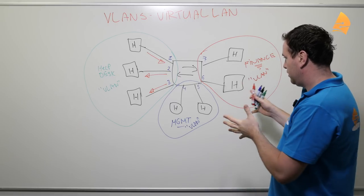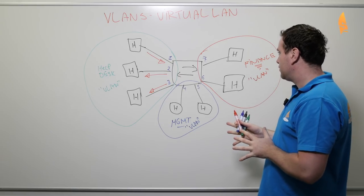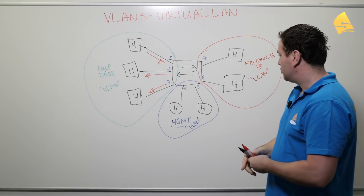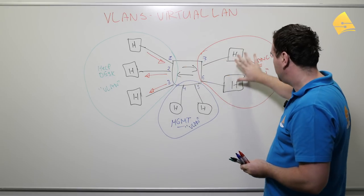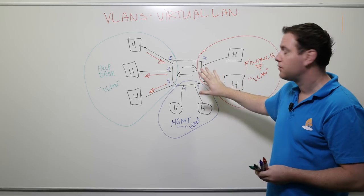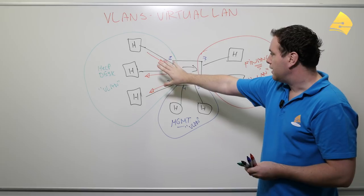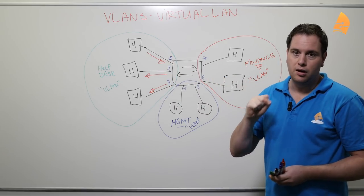So this is basically how VLANs work. There's one more thing that I should mention. Like right now with the switch over here, it's impossible to communicate between the different VLANs. But there is a possibility to communicate between VLANs. But then you will need a router.